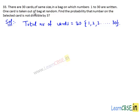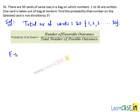One card is taken out of the bag at random and we need to find the probability that the number on the selected card is not divisible by 3. Let E be the event of getting a card with a number divisible by 3.